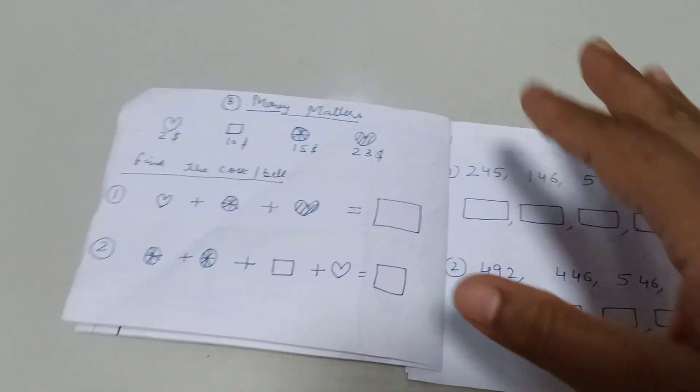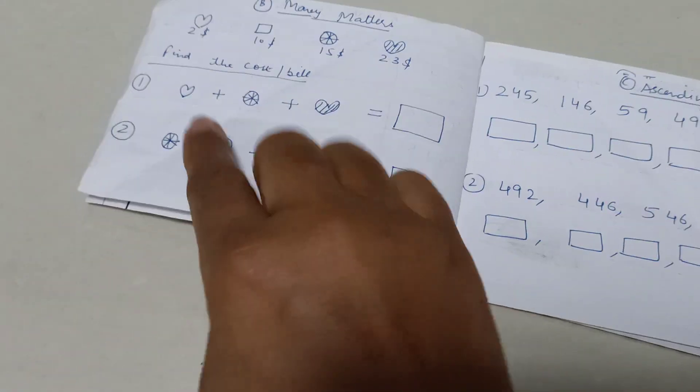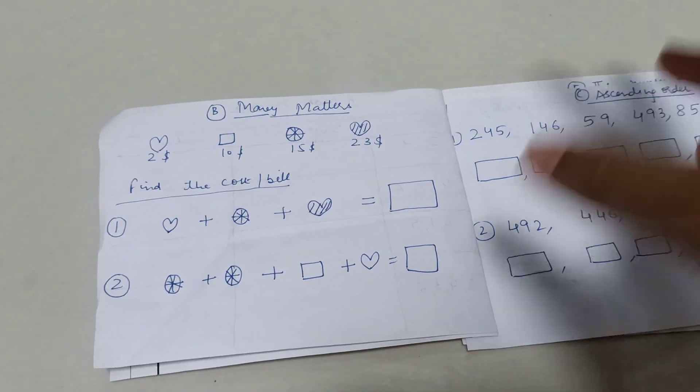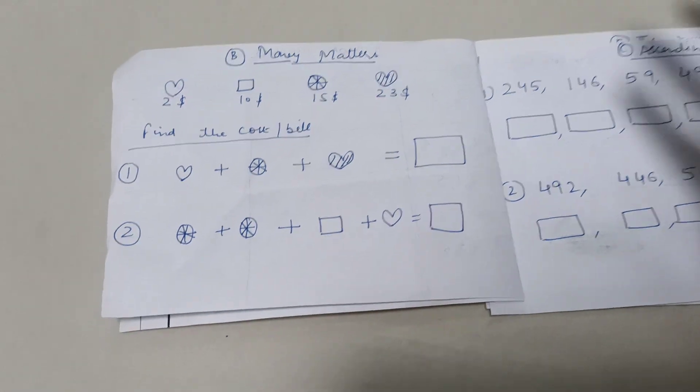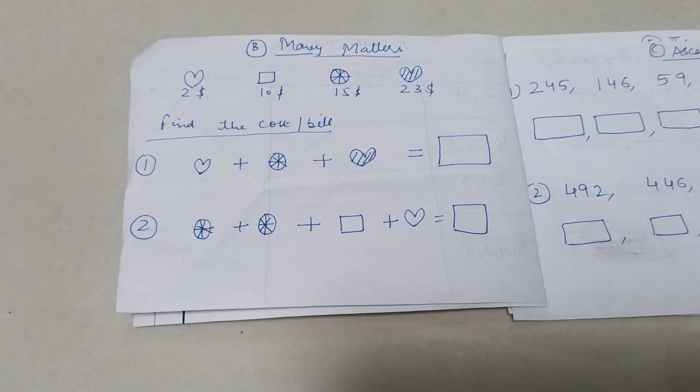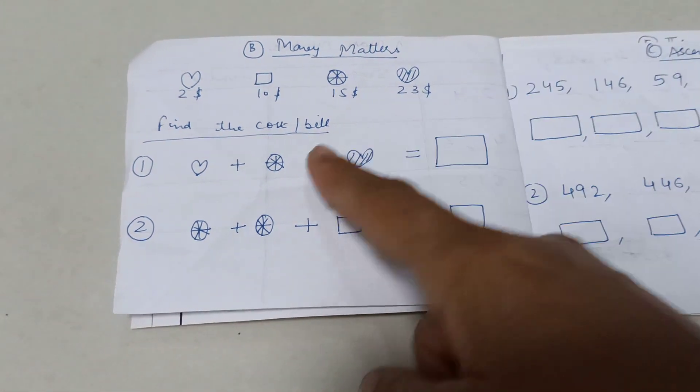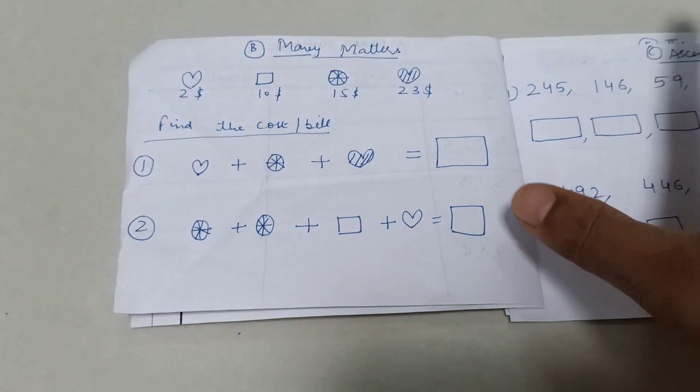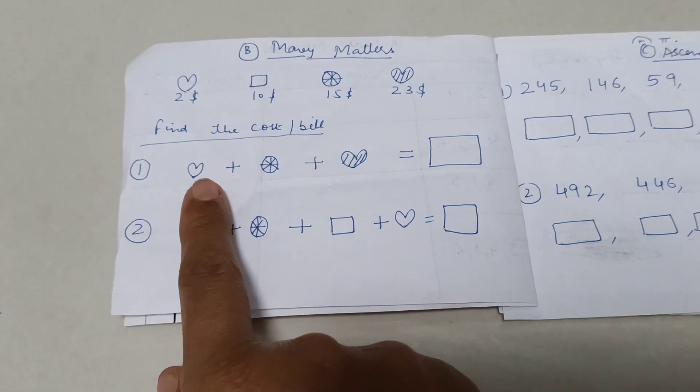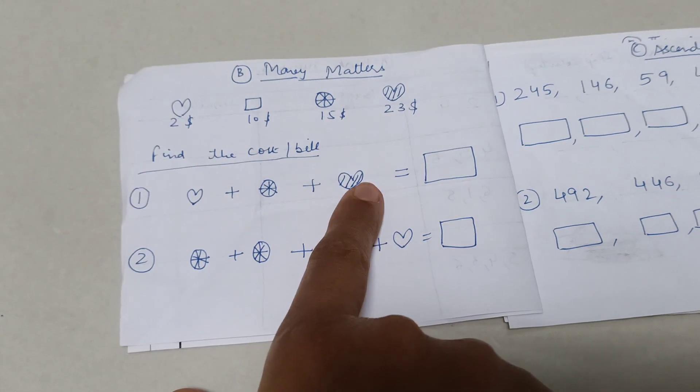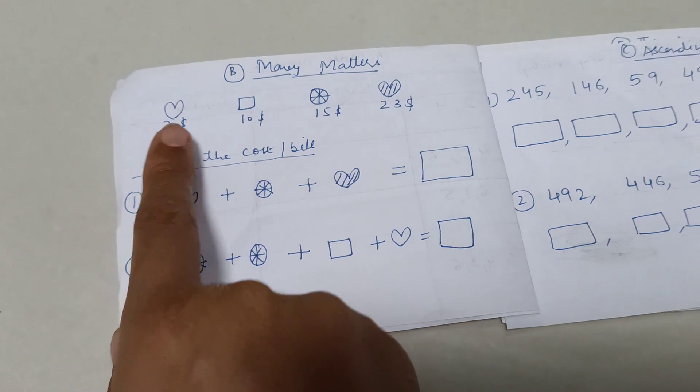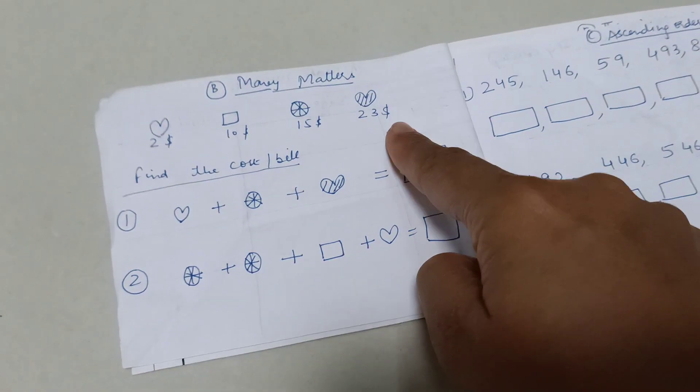Going to the next activity, money matters. I have drawn some objects and given their cost. We have done these activities in past but with less complicated numbers. Here we are going to the higher level that is 10, 15, 23. The question is simple that you have to find the total cost or the bill amount. If you buy a heart, this thing and this heart with shading, what will be the bill? So it should be $2 plus $15 plus $23.